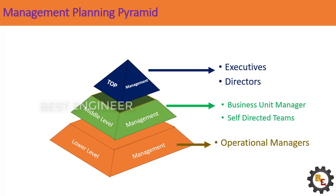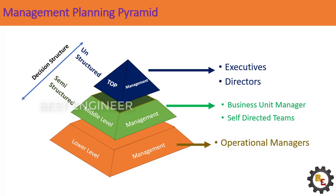In lower level management, operation managers, supervisors, superintendents, and foremen are the responsible persons. Regarding decision structure: top level management has an unstructured decision structure and can alter their decisions at any point in time. Middle level management has a semi-structured decision structure and can take decisions up to their limit. Lower level management has a structured decision to follow — they cannot take any decision without management consideration.